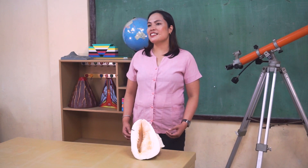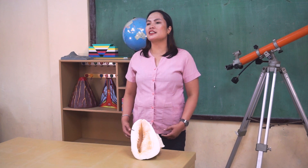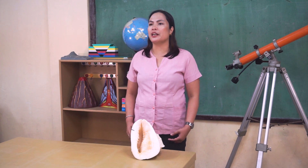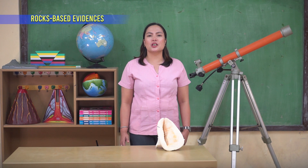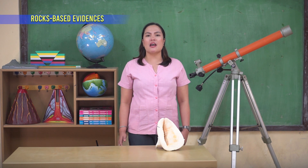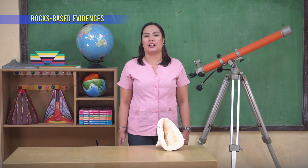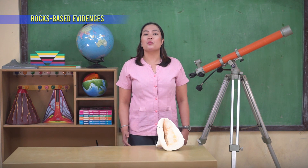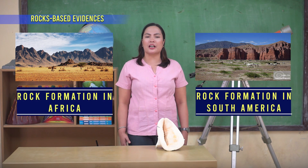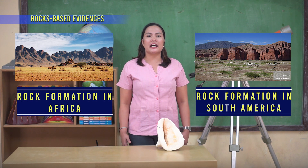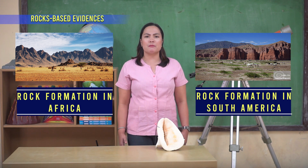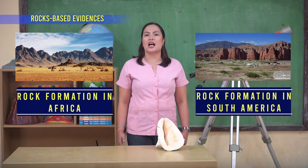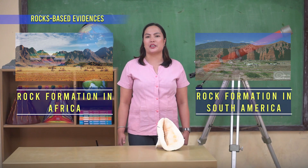The next evidence that supports the Continental Drift Theory are the rocks. In addition to Africa fitting South America, rock formations in Africa line up with those in South America, as if it was once a long mountain range.